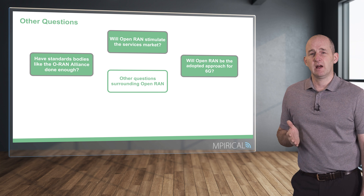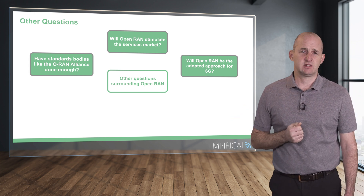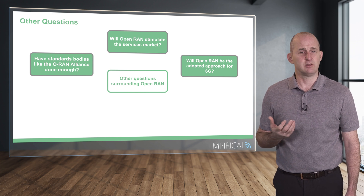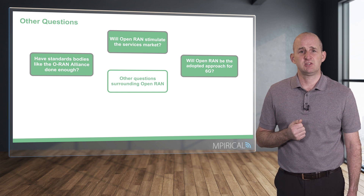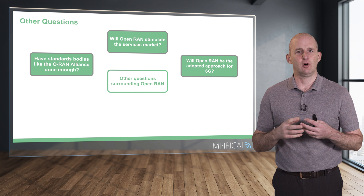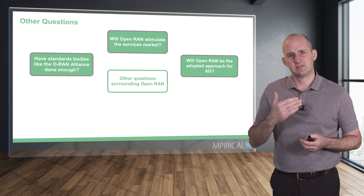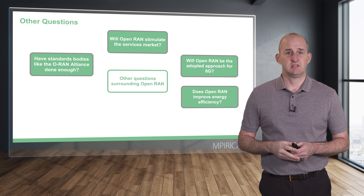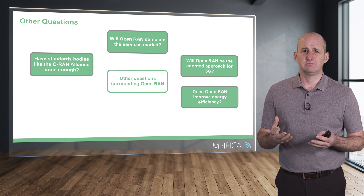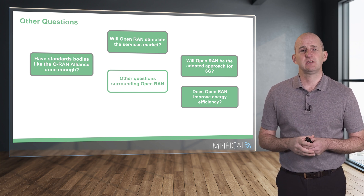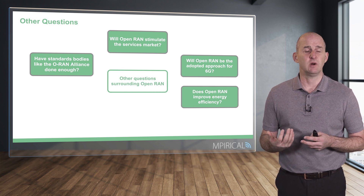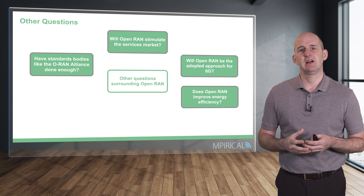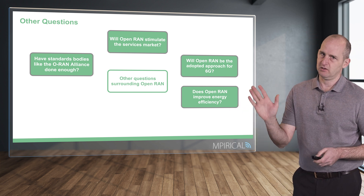Another question is whether Open RAN, or something like it, will be the approach taken for 6G. That will be answered in the coming years — if we see a huge proliferation of Open RAN technology, the chances are we'll see it deployed in 6G. We will undoubtedly see a Centralized RAN or distributed base station approach, it's just whether we see everything else related to Open RAN. There is also the question of energy efficiency: using commercial off-the-shelf hardware may offer cost savings, but specialized chips provide efficiency benefits, particularly in terms of energy consumption.